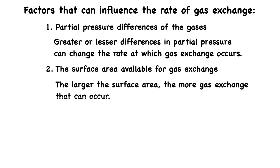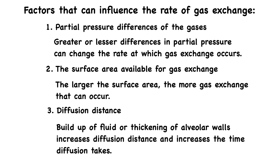Diffusion distance also influences the rate of gas exchange. The respiratory membrane of the alveoli is very thin, so diffusion can occur quickly. The capillaries are also thin and narrow, which allows diffusion to occur quickly as well. In cases where there is a buildup of interstitial fluid, such as in pulmonary edema, this will slow the rate of gas exchange because it increases the diffusion distance. Thickened alveolar walls, as seen in conditions like pulmonary fibrosis, can also slow diffusion by increasing the distance.